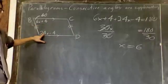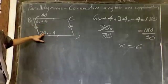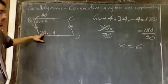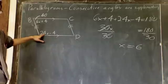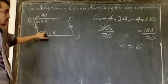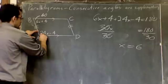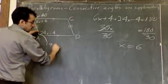This one down here, 24 times 6. Well, 24 times 6, that is 144. And 144 minus 4 is 140. So, we know that angle A is 140 degrees.